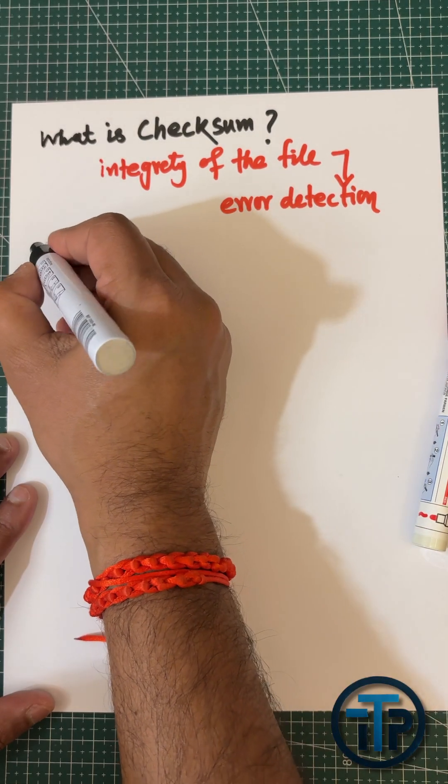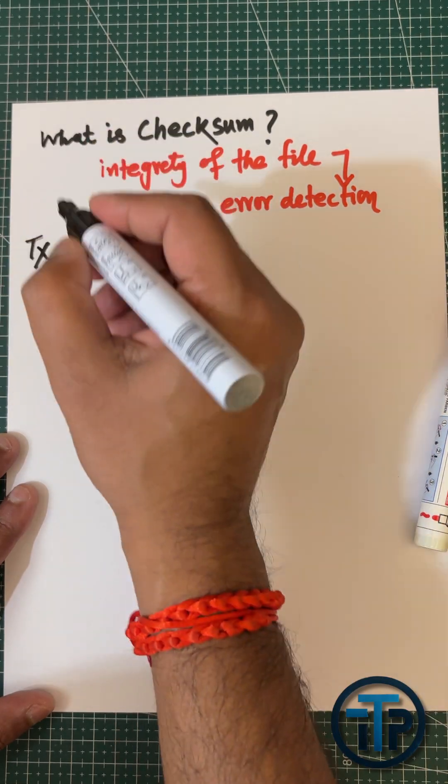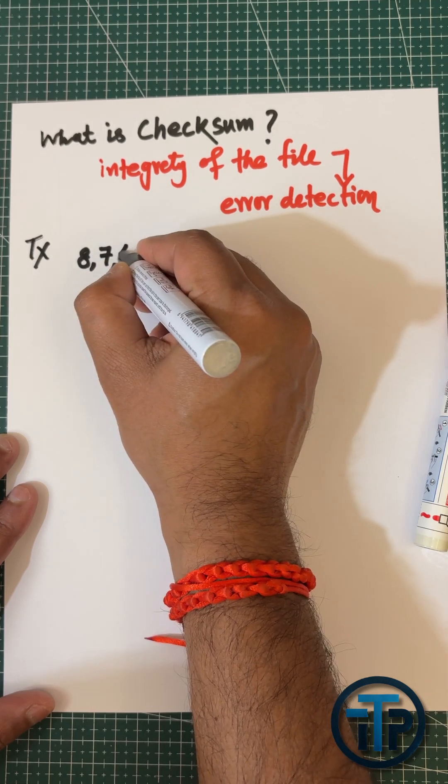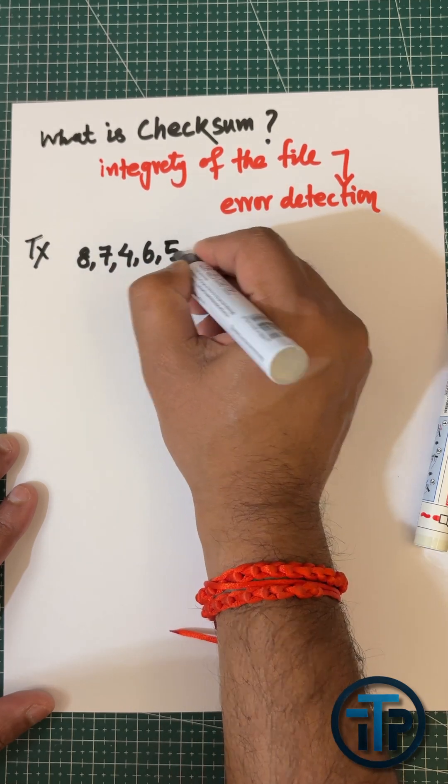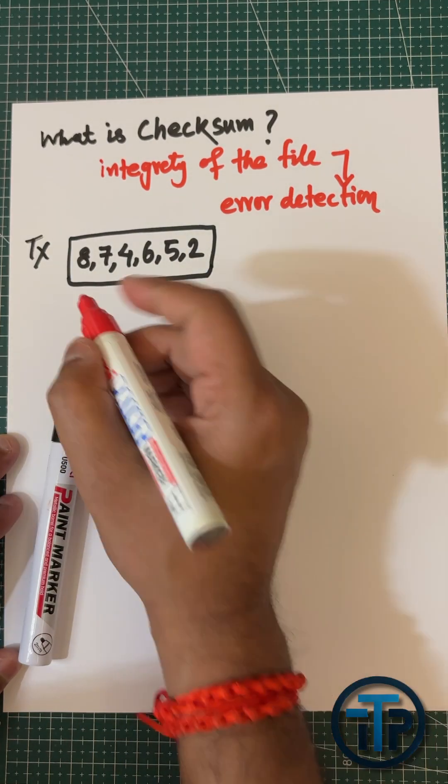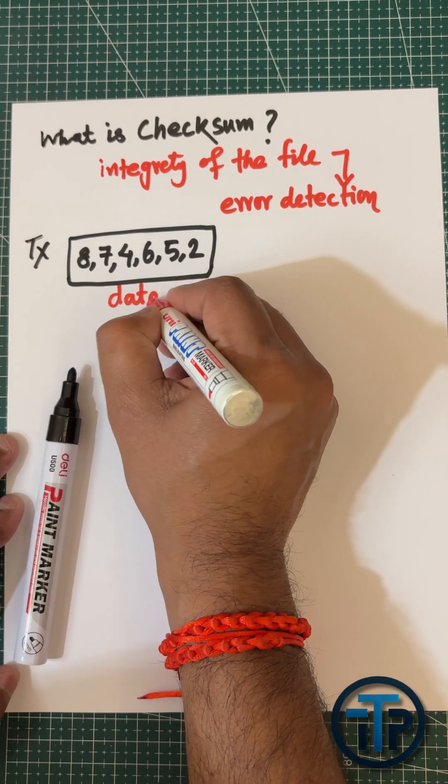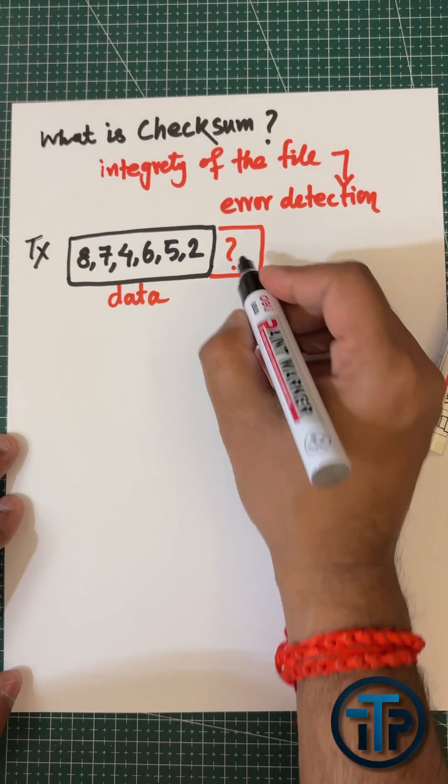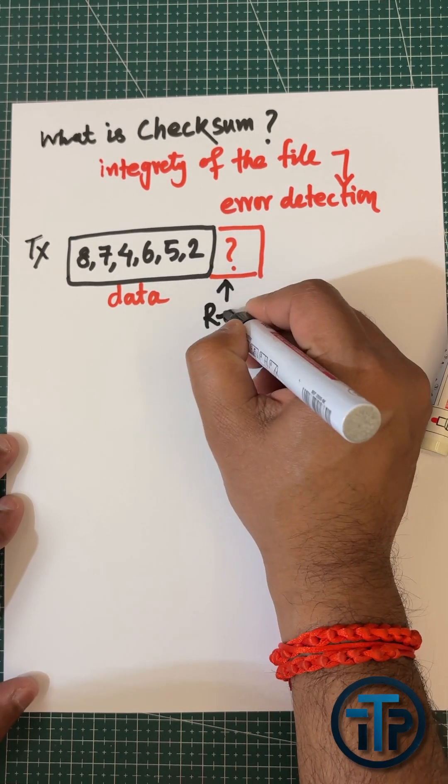Take an example. For example, there is a transmitter and he wants to send these random digits: 8, 7, 4, 6, 5, 2. That is your raw data.